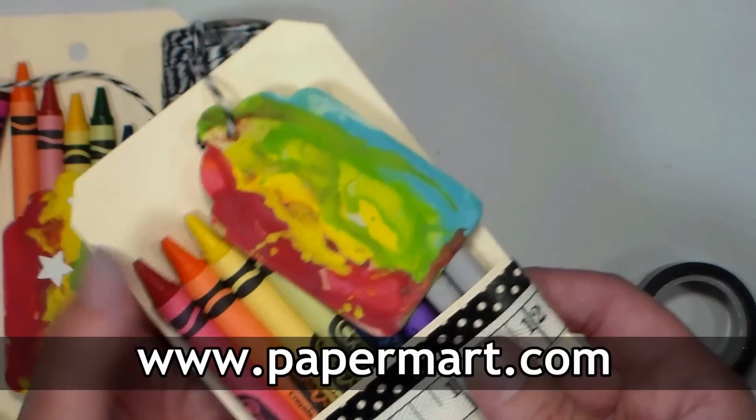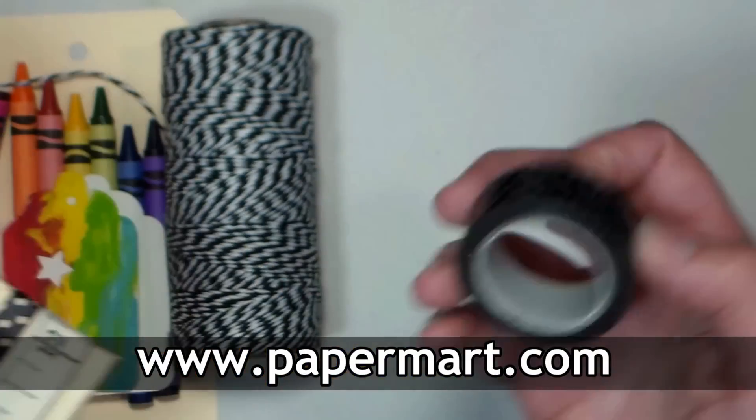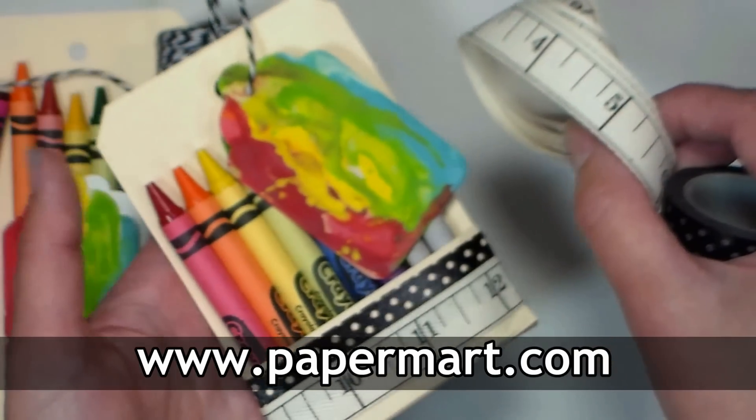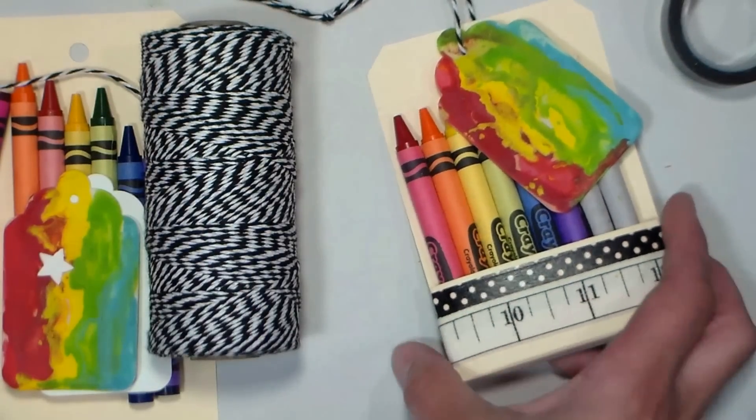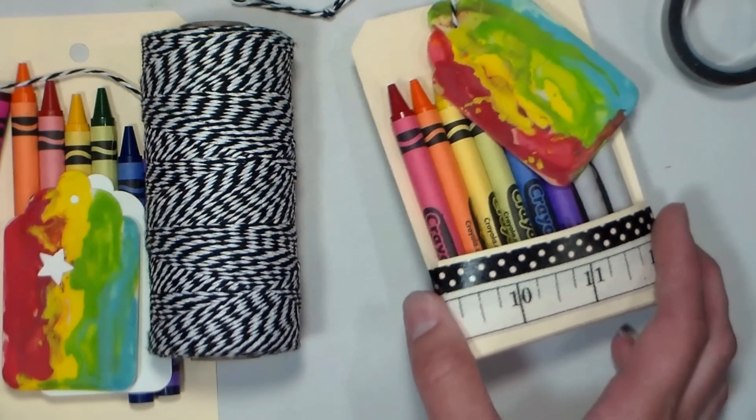This video is brought to you by Paper Mart. You can find the tags, the baker's twine, the washi tape, and the ribbon I'm using all at papermart.com. Find them online and there's all sorts of really fun packaging stuff too, so you will find all kinds of stuff for your next craft project or party.